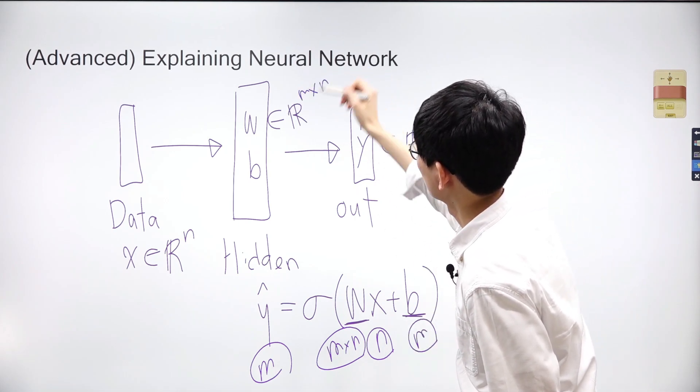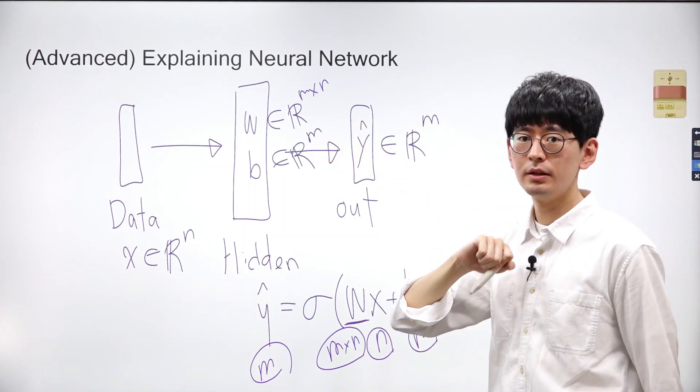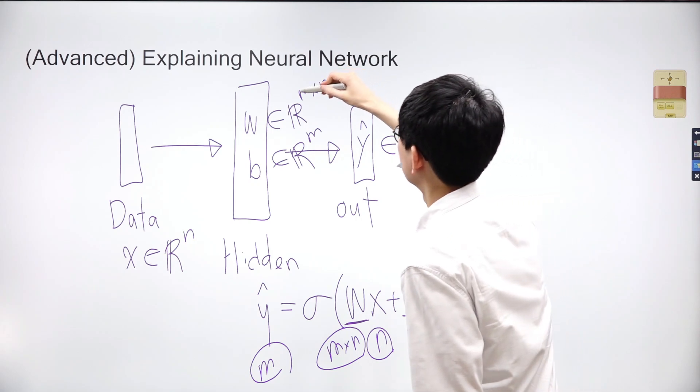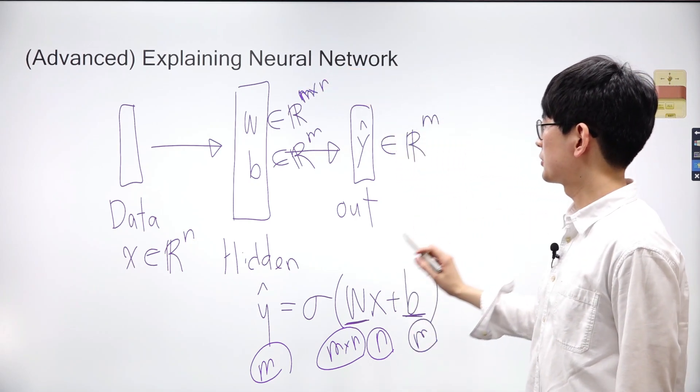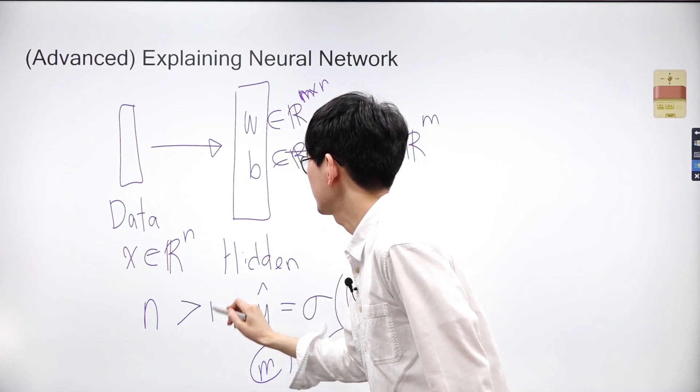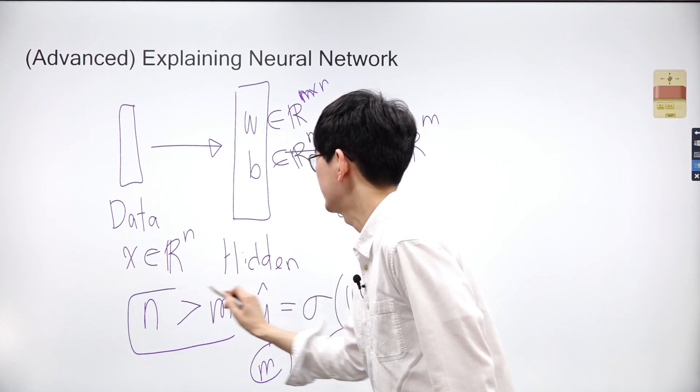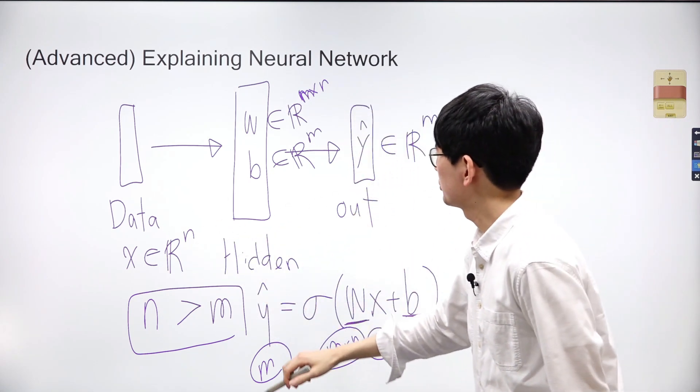To clarify, W is an M by N matrix, and B is a vector in R^m. The first letter here is M. Suppose the data X is an image, and the output Y-hat is a list of labels of the image. In this case, N is much larger than M.